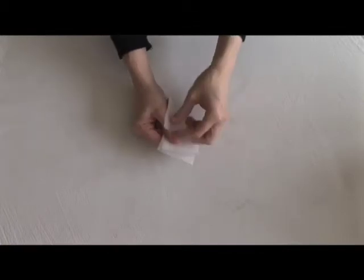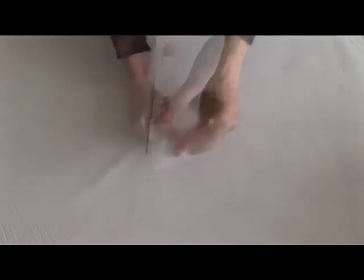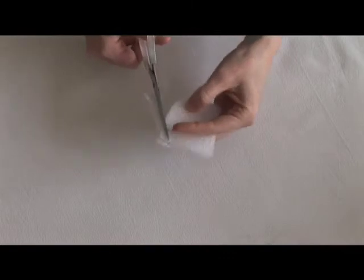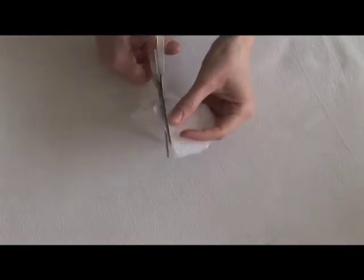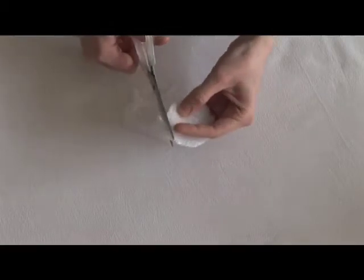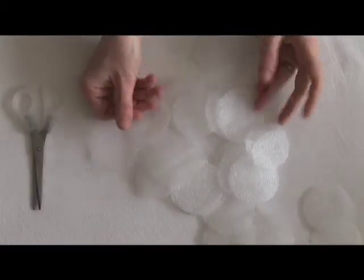First you have to cut out square shapes. You can put several together and then use this square shape to cut out the round ones. You will need quite a lot, so do it at the beginning.